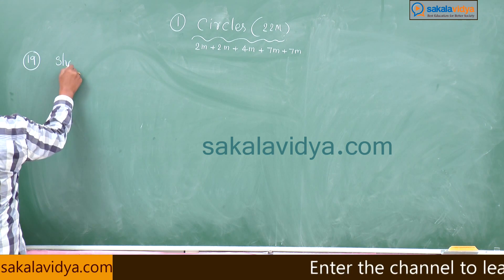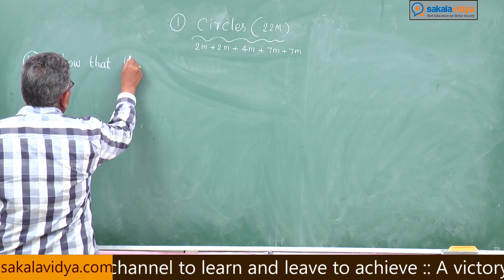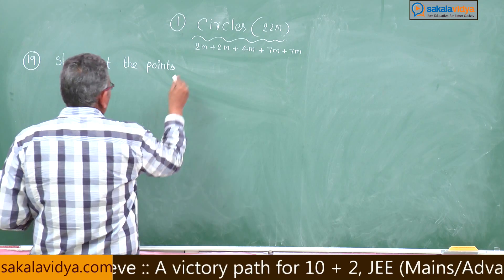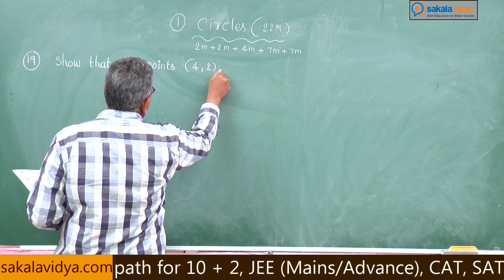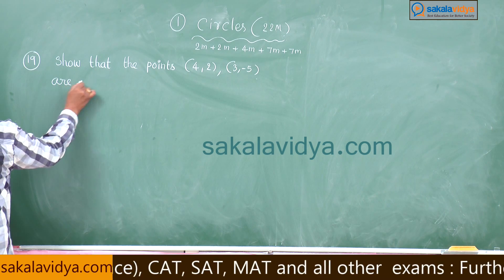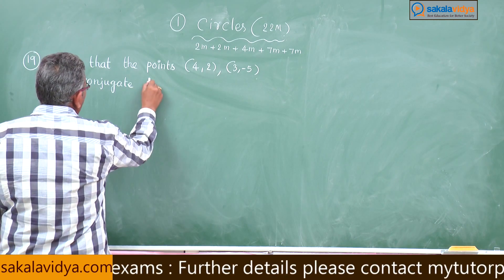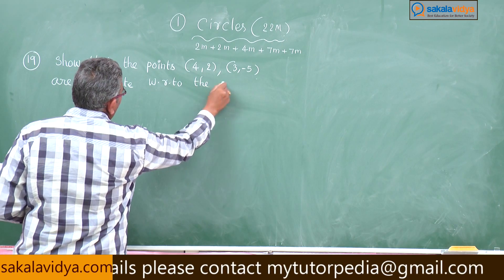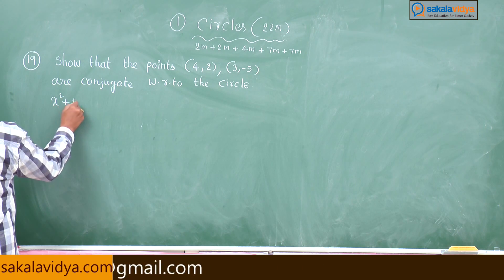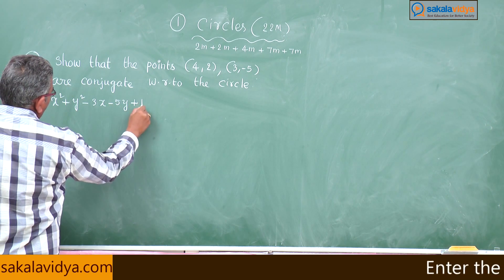Show that the points (4, 2) and (3, -5) are conjugate with respect to the circle x² + y² - 3x - 5y + 1 = 0.